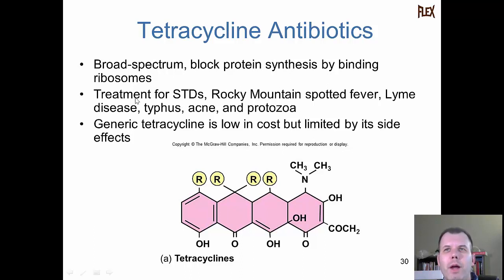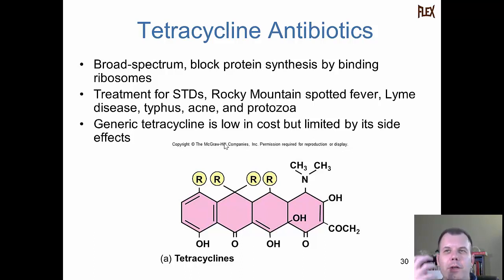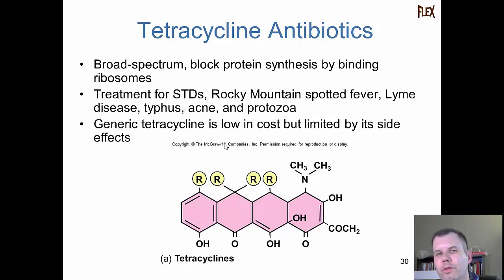Tetracyclines block protein synthesis by binding to ribosomes and prohibiting peptide bond formation. They're low cost, but do cause side effects: kidney and liver failure, and if used in young kids with growing bones and teeth, they can cause mineralization problems. People who had a lot of tetracycline as a child sometimes have yellow lines on their teeth where the tetracycline bonded with calcium. It's also not very soluble in water - you have to use alcohol to make it soluble. So it's cheap but only used in the most severe cases.